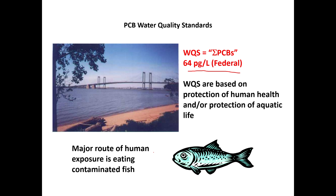The main route of human exposure to PCBs is eating contaminated fish. People will eat the fish they catch in contaminated rivers regardless of warnings — it's free food. There are signs posted warning against eating fish, but people ignore them. States and tribes can set their own standards: New York has a standard of 1 pg/L for PCBs — which is below analytical detection limits, since even the cleanest blanks are around 88 pg/L.